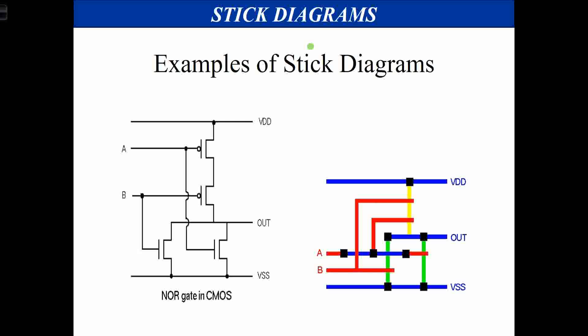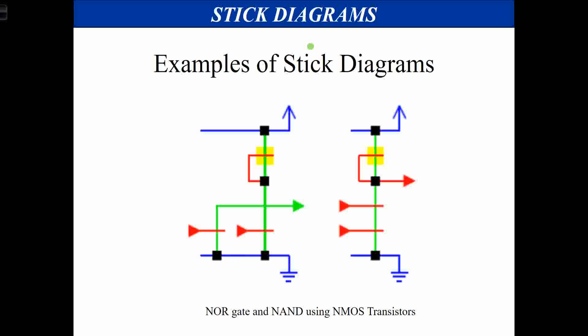For a NOR gate: PMOS transistors are in series and NMOS are in parallel. The stick diagram shows VDD and VSS (ground). For pull-up, the transistors are in series; for pull-down, the transistors are in parallel.